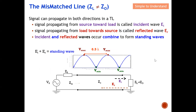Signal can propagate in both directions in a transmission line. In a coaxial cable, the signal can propagate either left to right or right to left. Signal propagating from source towards the load is called the incident wave. Signal propagating from the load towards the source is called the reflected wave. When the incident wave hits the load impedance, it creates a reflection — this is classified as the reflected wave.